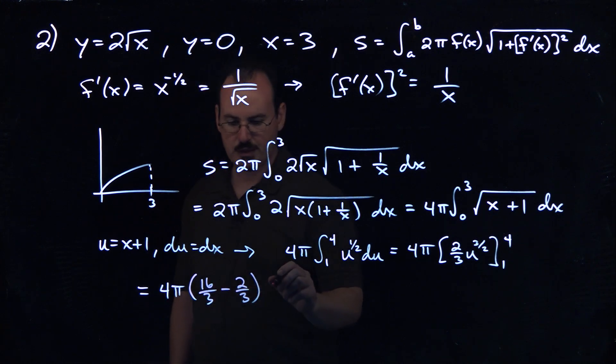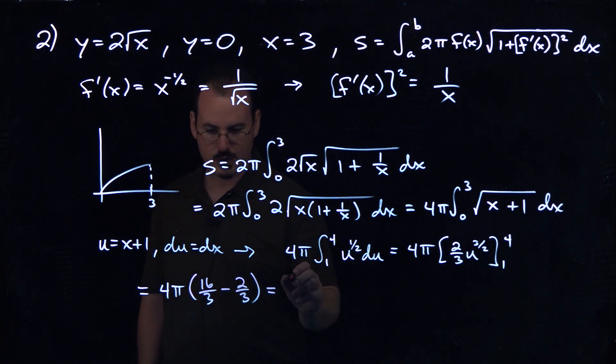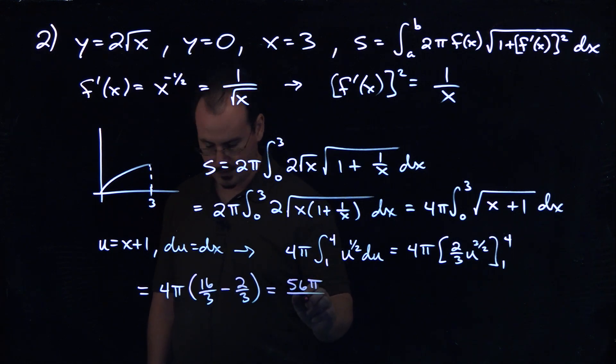16 thirds minus 2 thirds, that's 14 over 3. 14 times 4, 56. So we get 56 pi over 3.